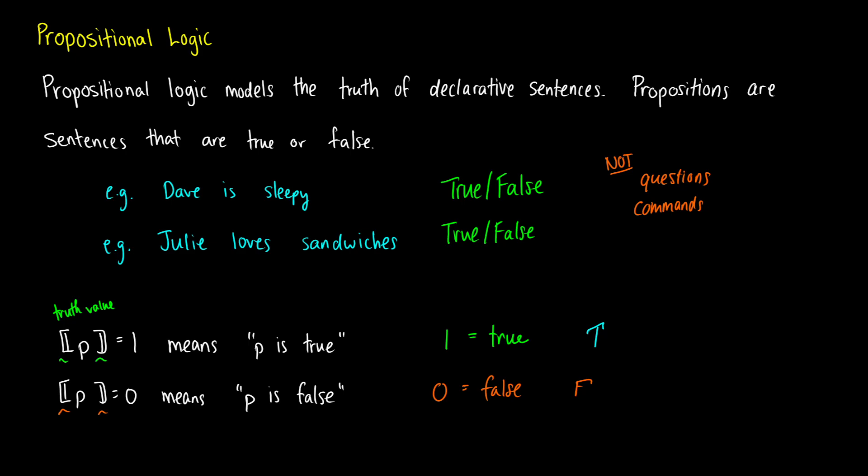We can take simple propositions and combine them into more complex propositions, which are called well-formed formulas, or WFFs — 'woofs.' The rest of this will be going through all of those different operators and taking a look at how they combine with their truth values.